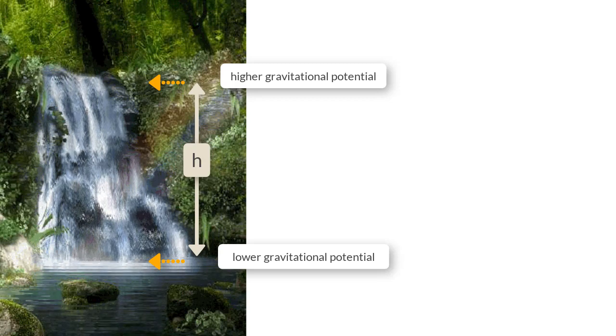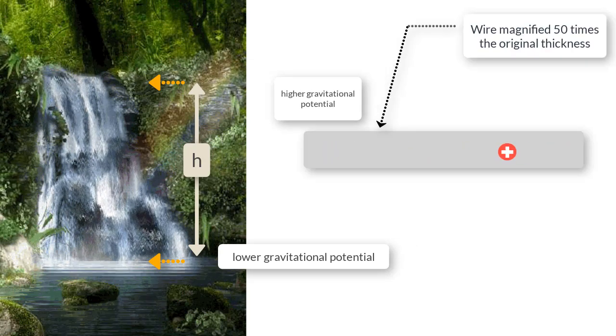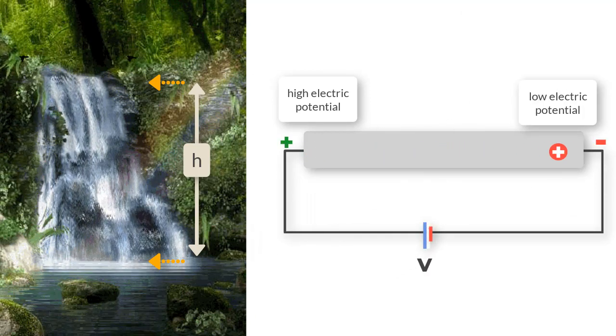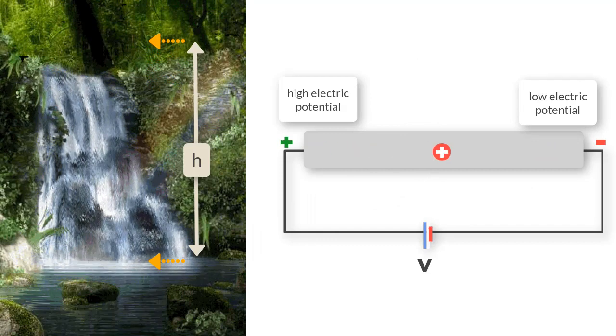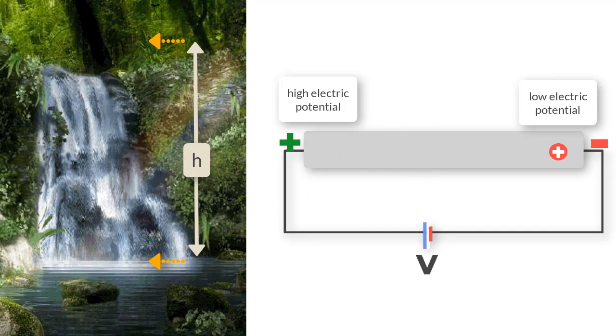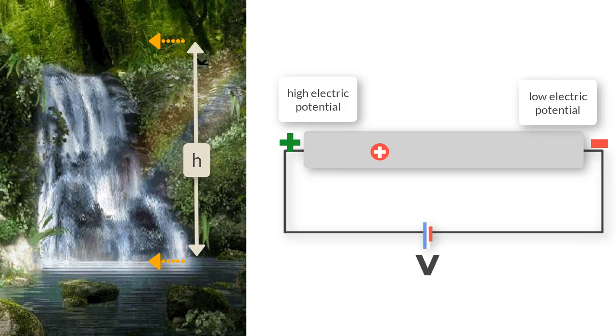Quite the same way electric current or the charges flow from a place of high electric potential to a place of low electric potential. So more the difference in elevation, faster the flow of water and likewise more the difference in electric potential, more the flow of charges or current.